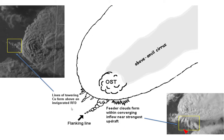West of the flanking line, you may sometimes see lines of towering cumulus that form above an invigorated RFD, also known as flanking towers. The orientation of the low-level features of interest does vary depending on storm motion and environmental winds. Most severe storms do not exhibit these storm signatures from satellite. However, when you are fortunate enough to observe them, the storm is most likely severe.